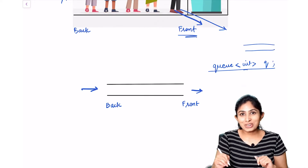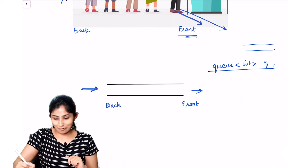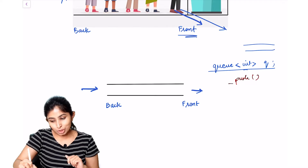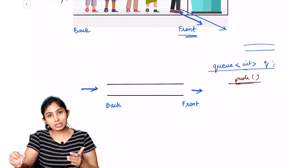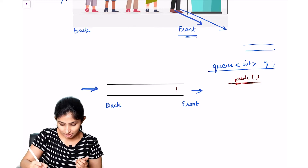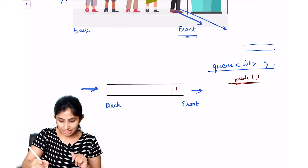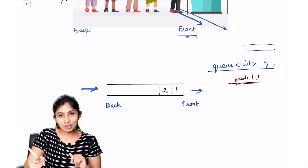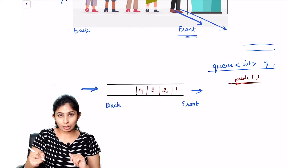Now let's look at all the operations we can perform on our queue. We can push elements into our queue. The push function inserts elements from the back of the queue. So if I want to push 1, this will insert 1 into our queue. If I push 2, this inserts 2 at the back. Similarly 3, 4, and so on.